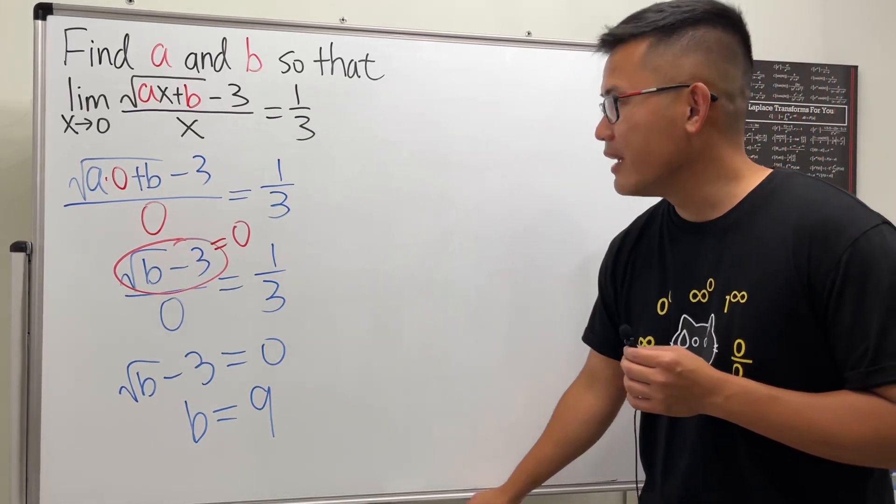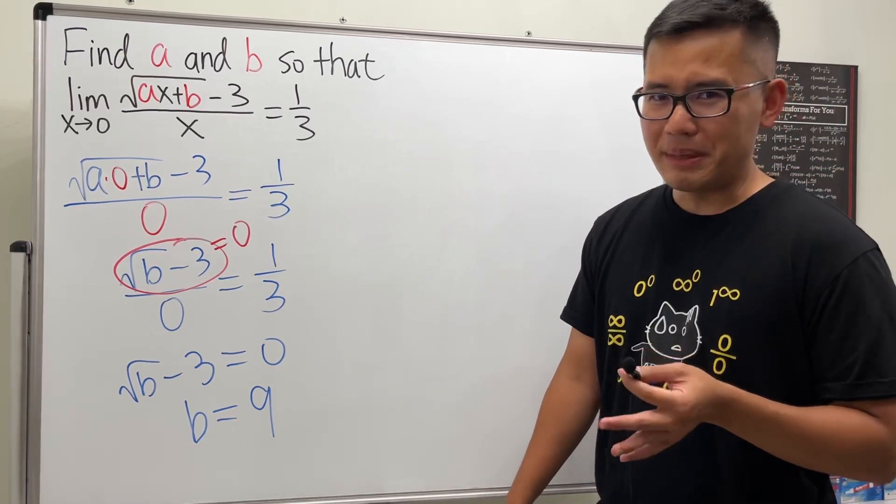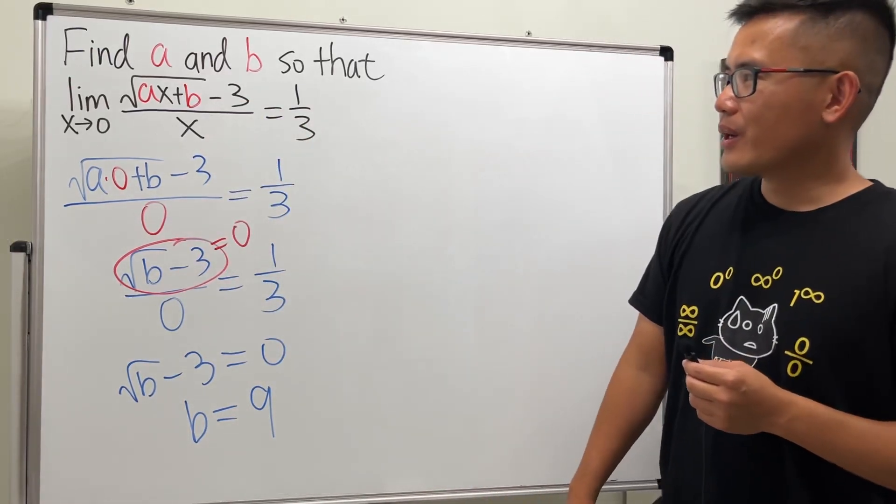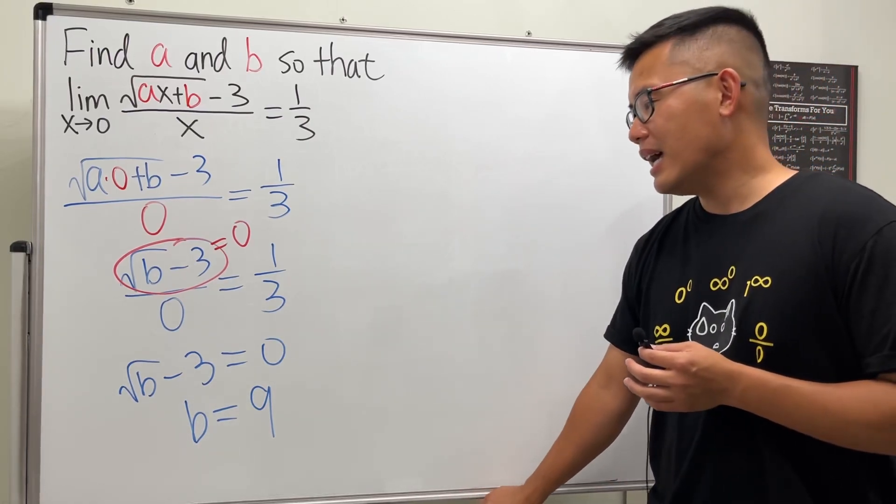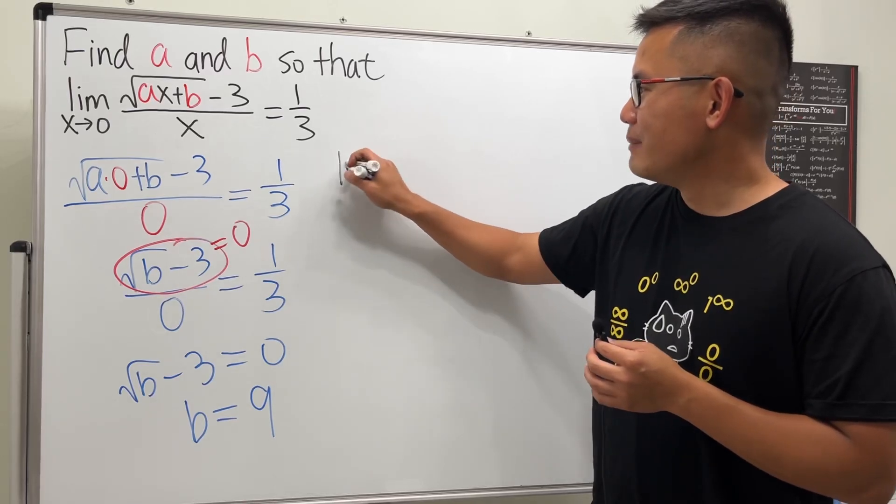All right, so now we have half of this question done. Let's just put nine back to the question and then pretend that we are going to work it out normally and see what happens.